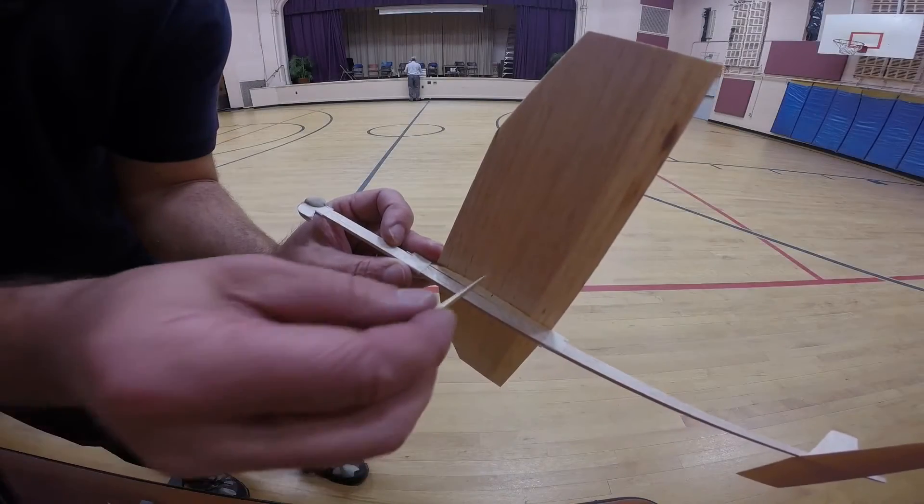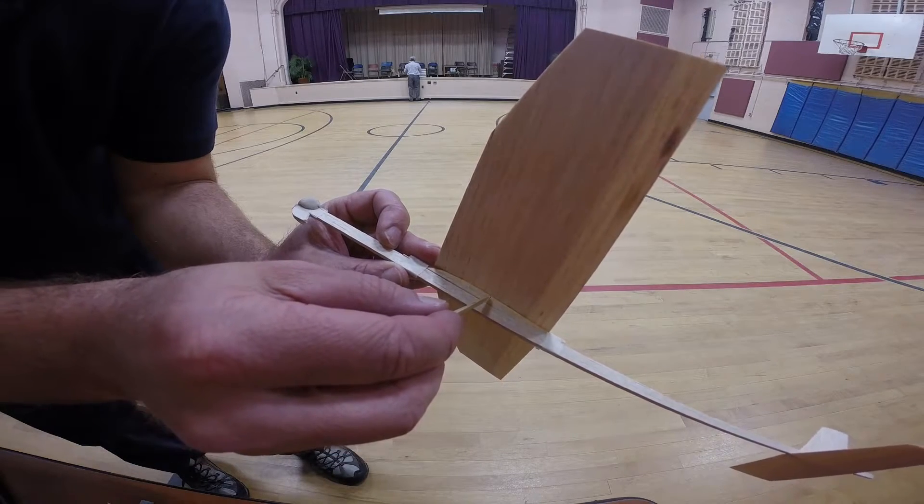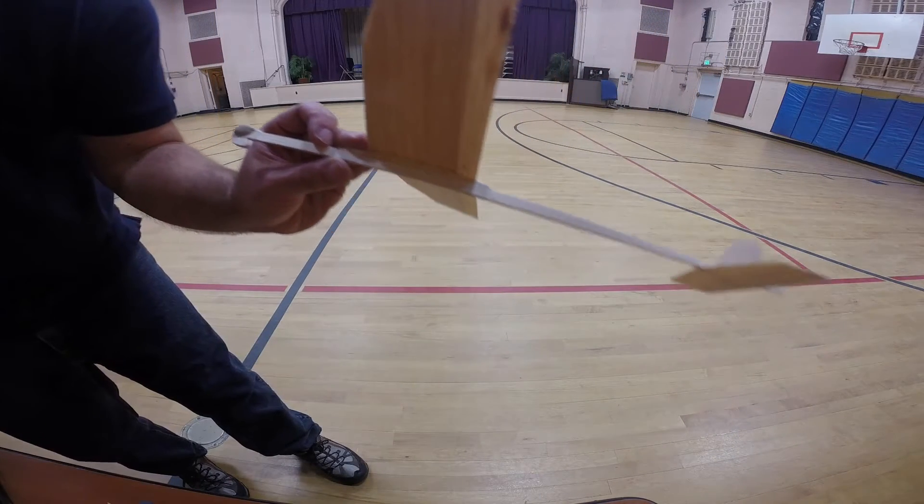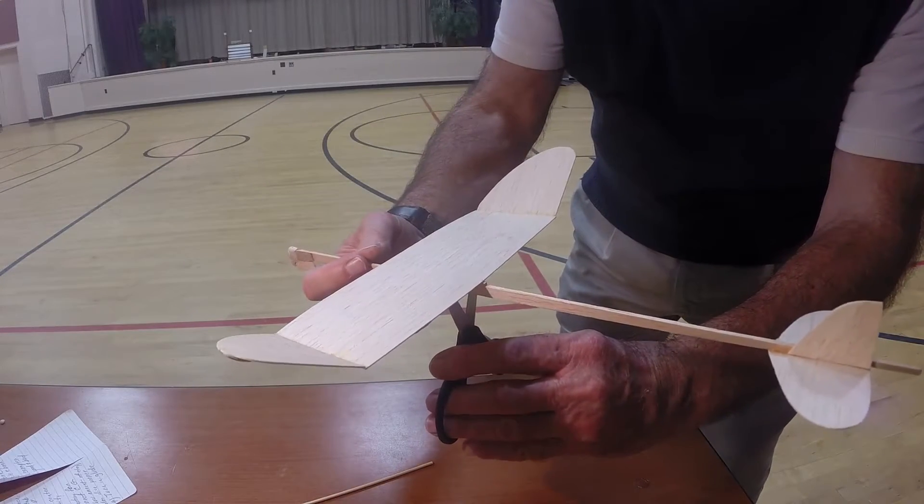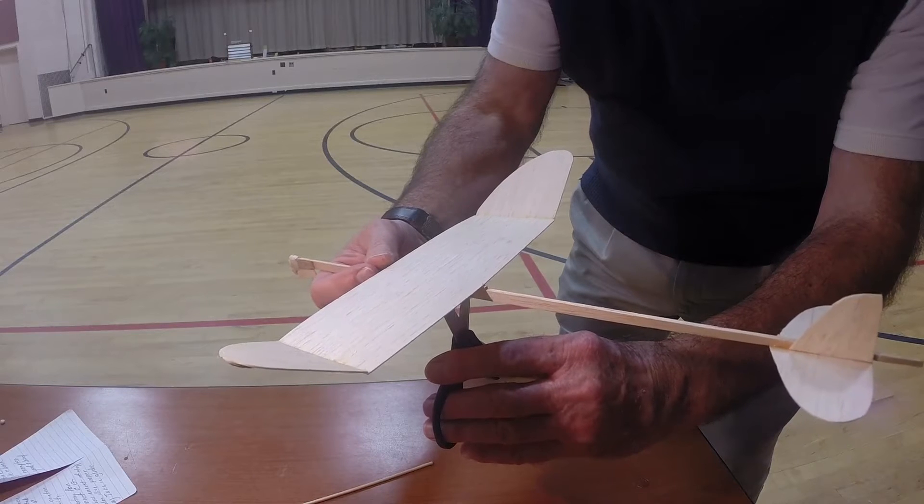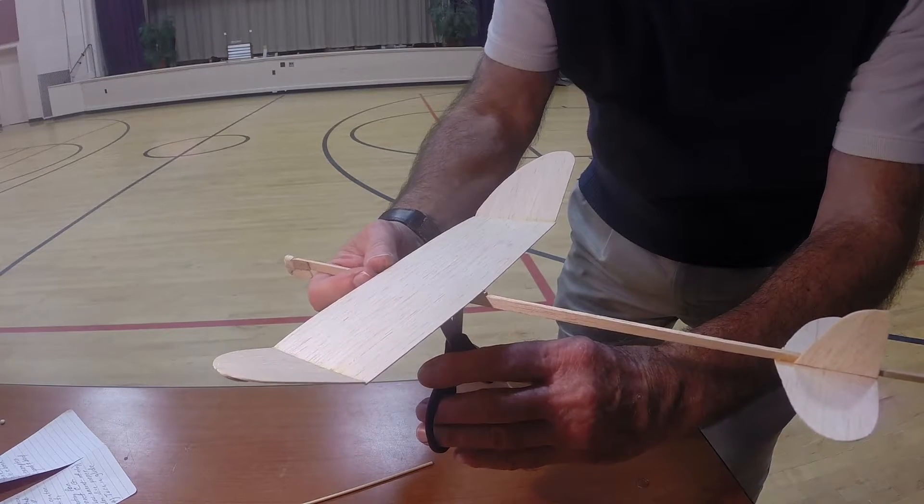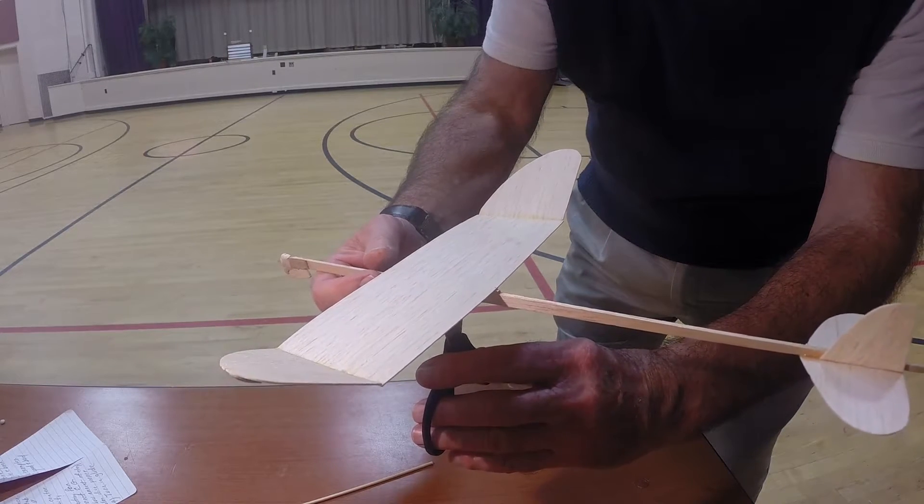The center of gravity location is usually shown on the construction plans as a circle divided into quarters with opposite sections shaded or given in the building instructions. If not, start by getting the glider to balance in the center of the wing cord.